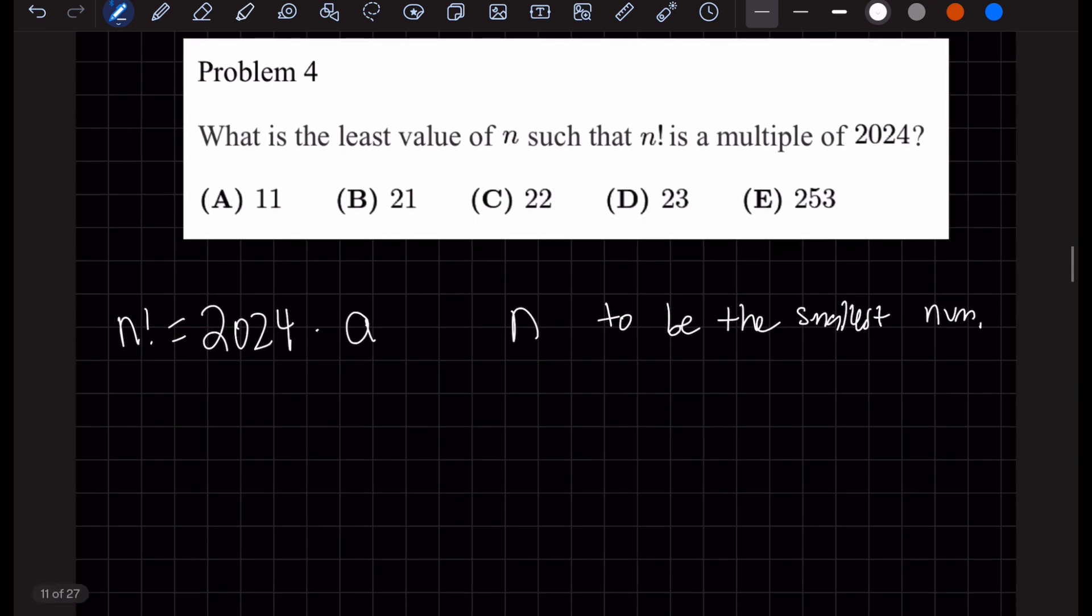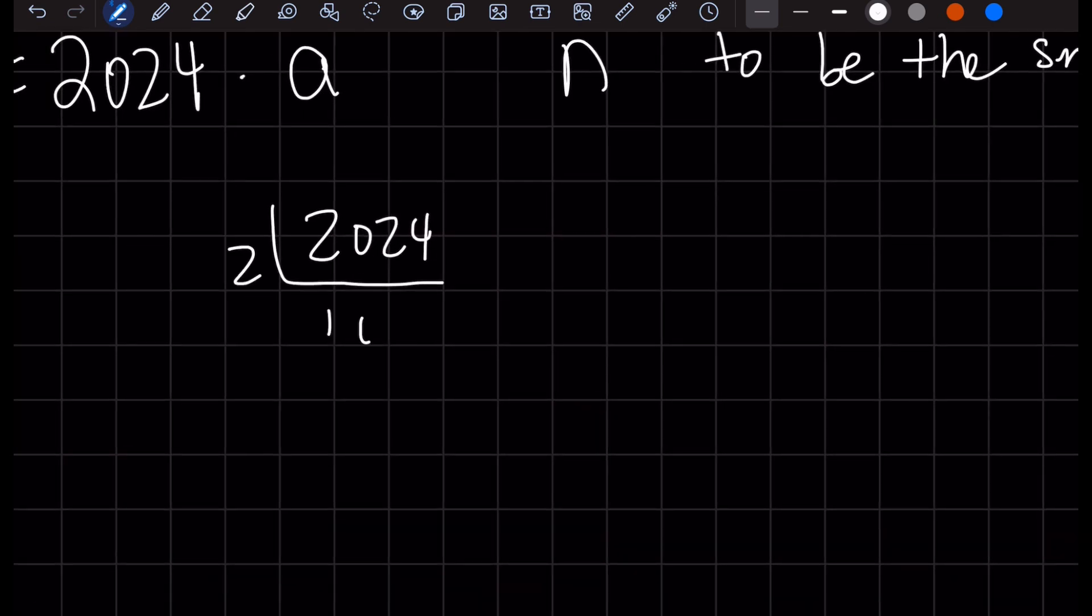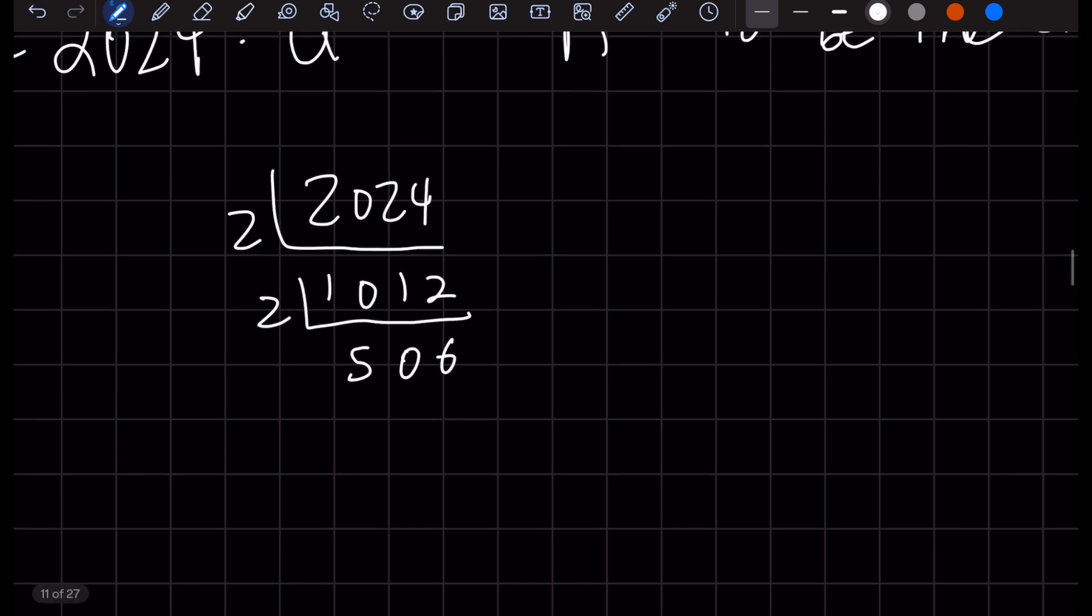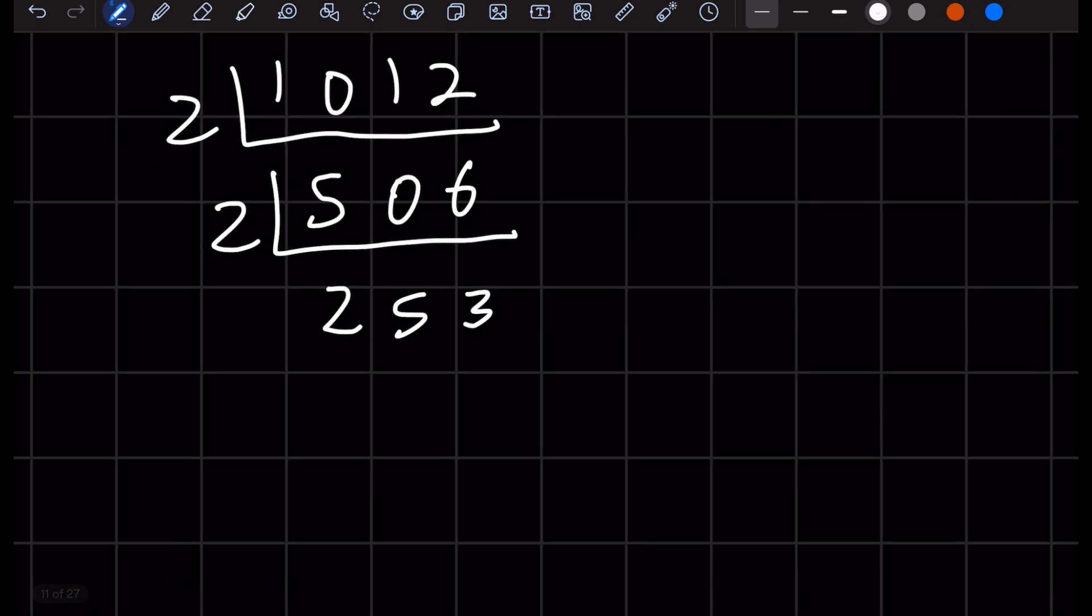Okay, so 2024, we could try to prime factorize this by doing the following. This could be divided by 2: 1, 0, 1, 2. It could be divided by another prime number, which is 2: 5, 0, 6. This could be divided by another prime number, 2: 2, 5, 3. And we see this gives us 253.